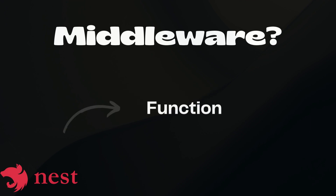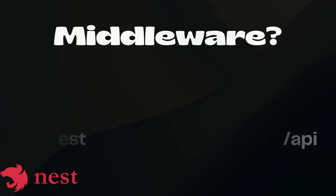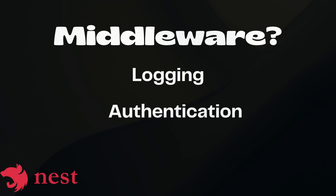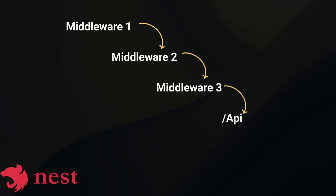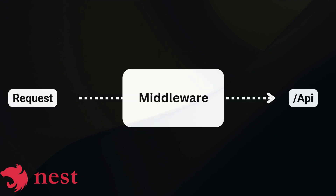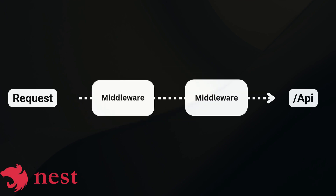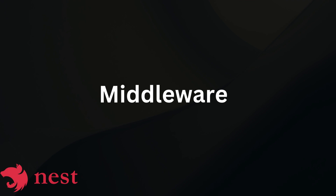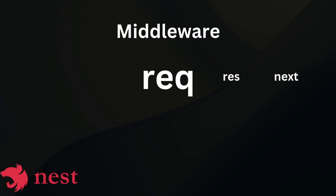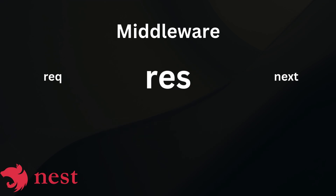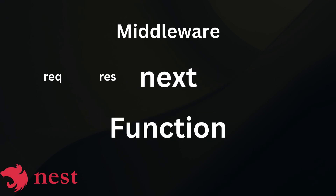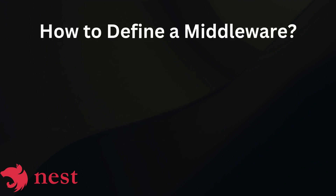Middleware in NestJS is a function that runs before the request reaches the route handler. It's commonly used for logging, authentication, and request transformation. Middleware functions run in order based on how they are applied in the application — they intercept the request, perform some operation, and then either pass control to the next middleware or the route handler. A middleware function takes three parameters: req (the request object from Express or Fastify), res (the response object), and next (a function that passes control to the next middleware or route handler).